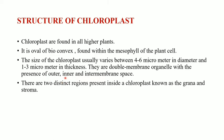There are two distinct regions present inside a chloroplast known as grana and stroma. Photosynthesis can be done by two ways: light reaction and dark reaction. The stroma is used for the dark reaction and the grana for the light reaction, so these two distinct regions are used for different forms of photosynthesis.